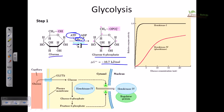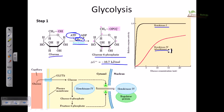There are four different types of hexokinases, and all of them are isomers of each other. Hexokinase I is found predominantly in the liver, while hexokinase IV is found in different tissues and is also called glucokinase.